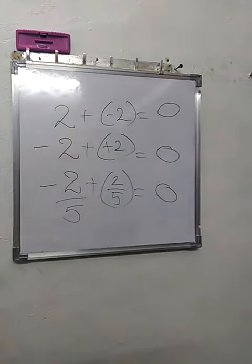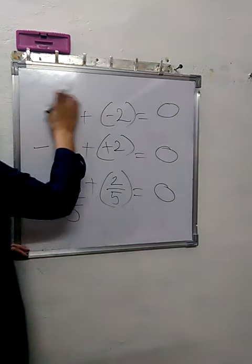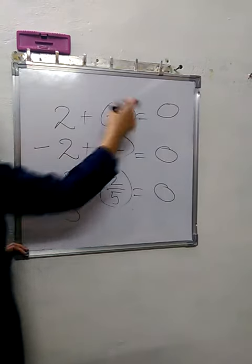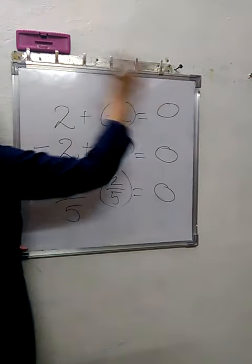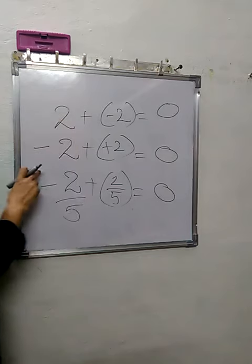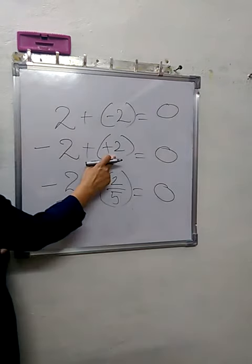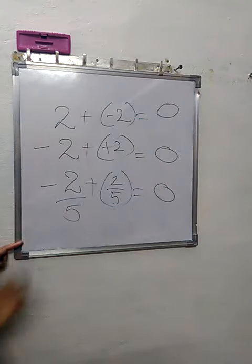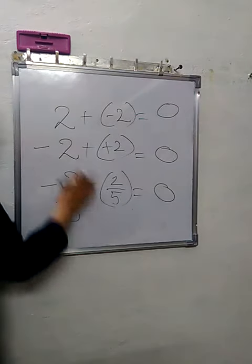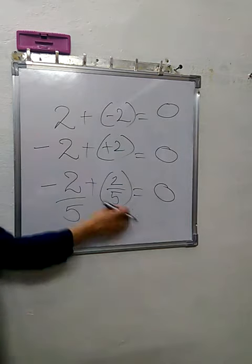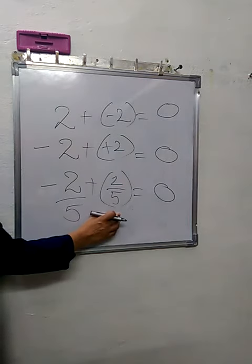...equals 0. So any whole number if added to its negative, answer is 0. Any negative or positive integer if added to its negative or positive, answer is 0. Any negative or positive rational number when added to its negative or positive in rational numbers...